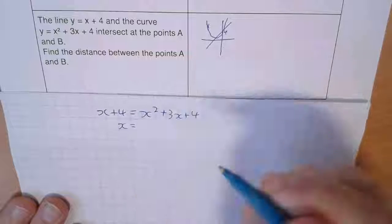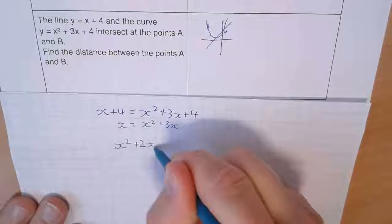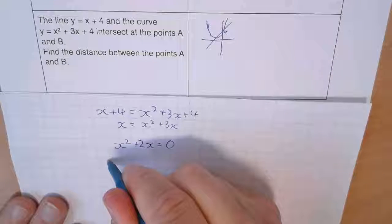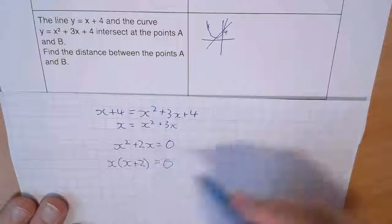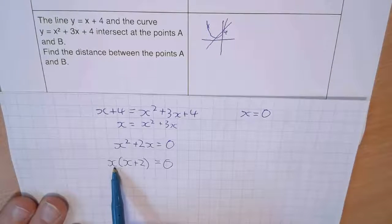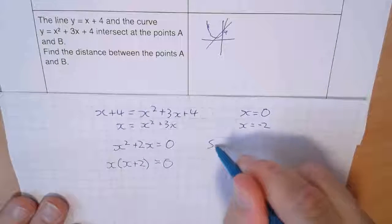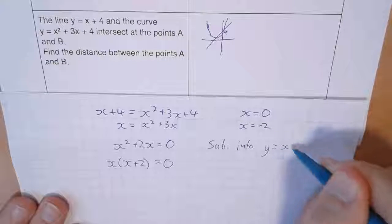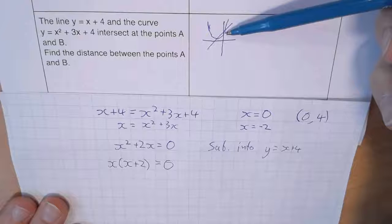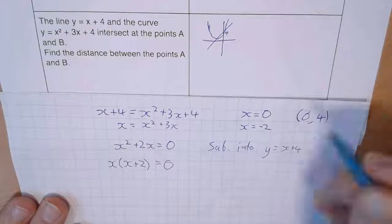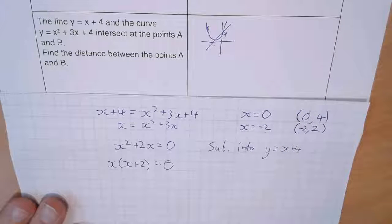Subtracting 4 from both sides gives 0 = x²+3x, then subtracting x: x²+2x = 0. Factorizing: x(x+2) = 0. So x = 0 or x = −2. Substituting into y = x+4 (i.e. y = 4 for the line): when x=0, the point is (0, 4); when x=−2, y = −2+4 = 2, so the point is (−2, 2). We'd already spotted (0,4) from the sketch.